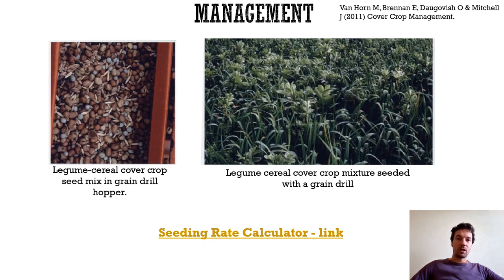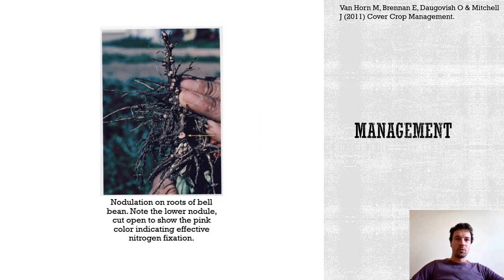Legumes are more sensitive to competition, and the grass component of a grass-legume mixture is more likely to dominate in soil with high residual nitrogen. If large biomass production from a cereal cover crop is required, nitrogen fertilization might be necessary.